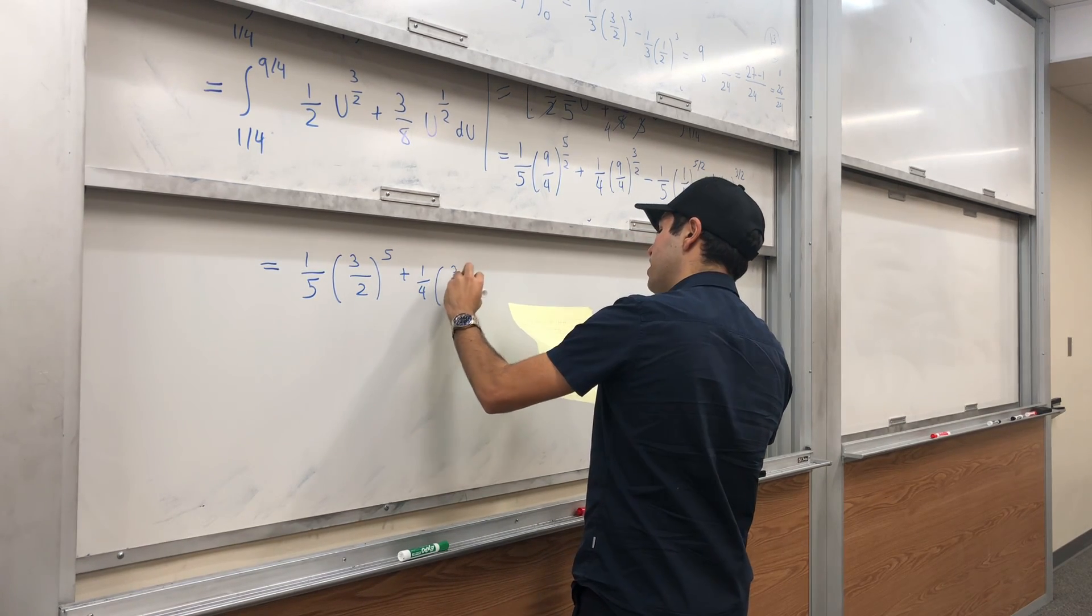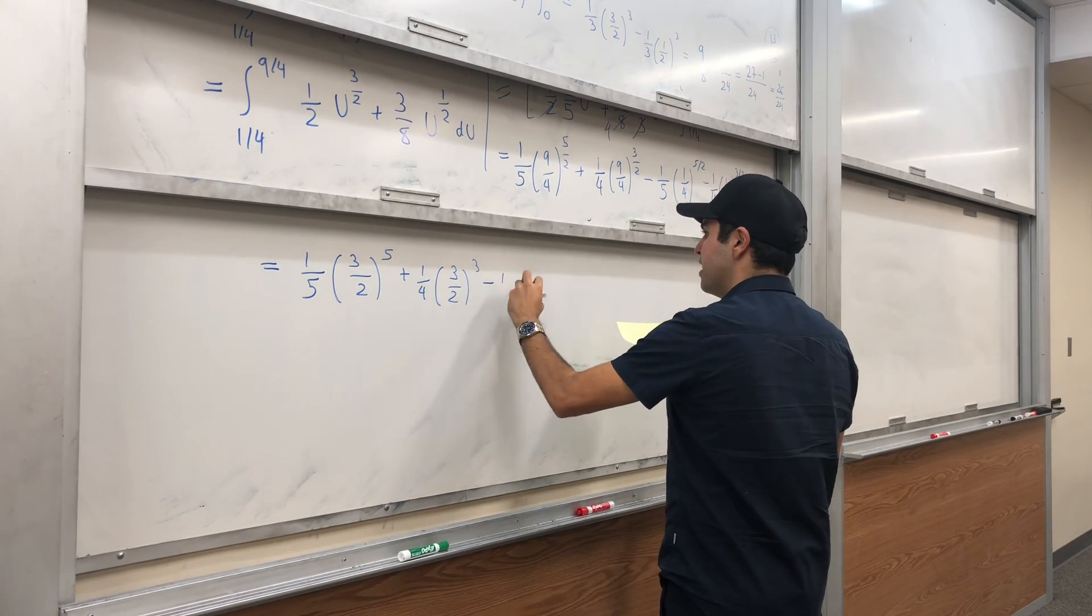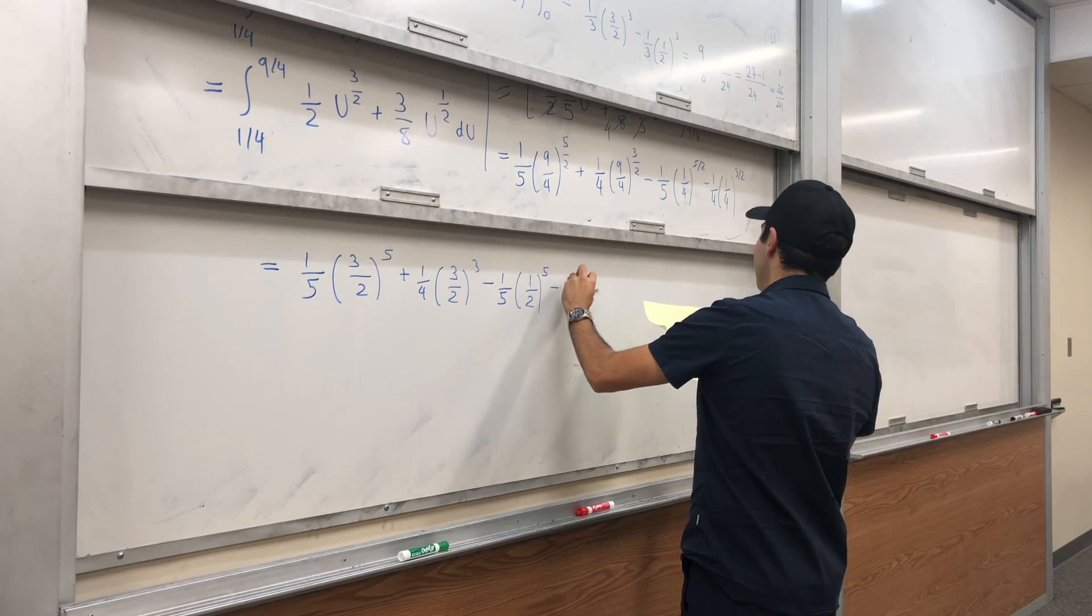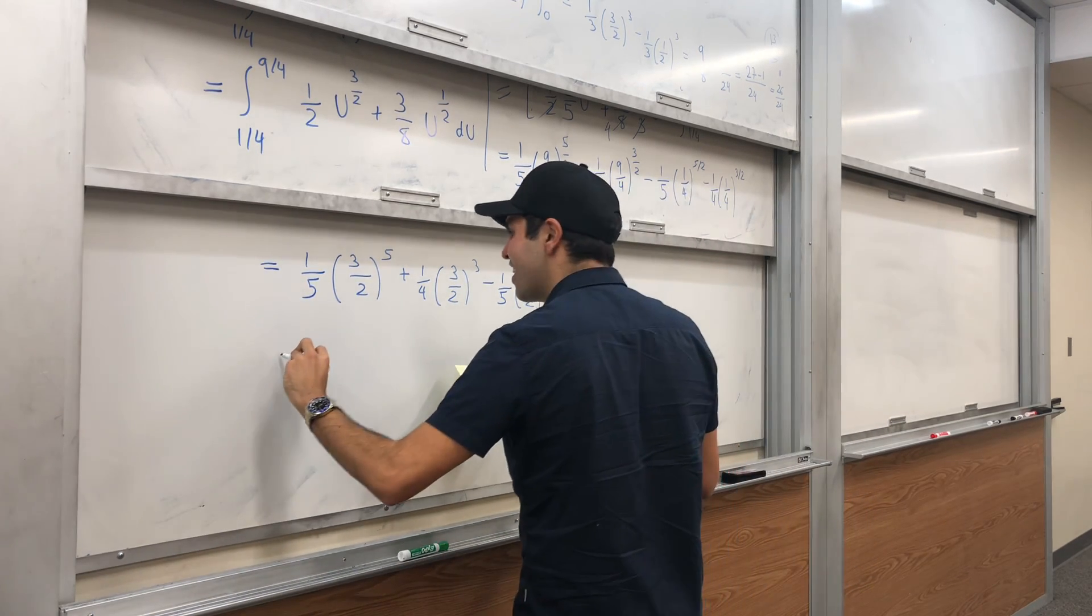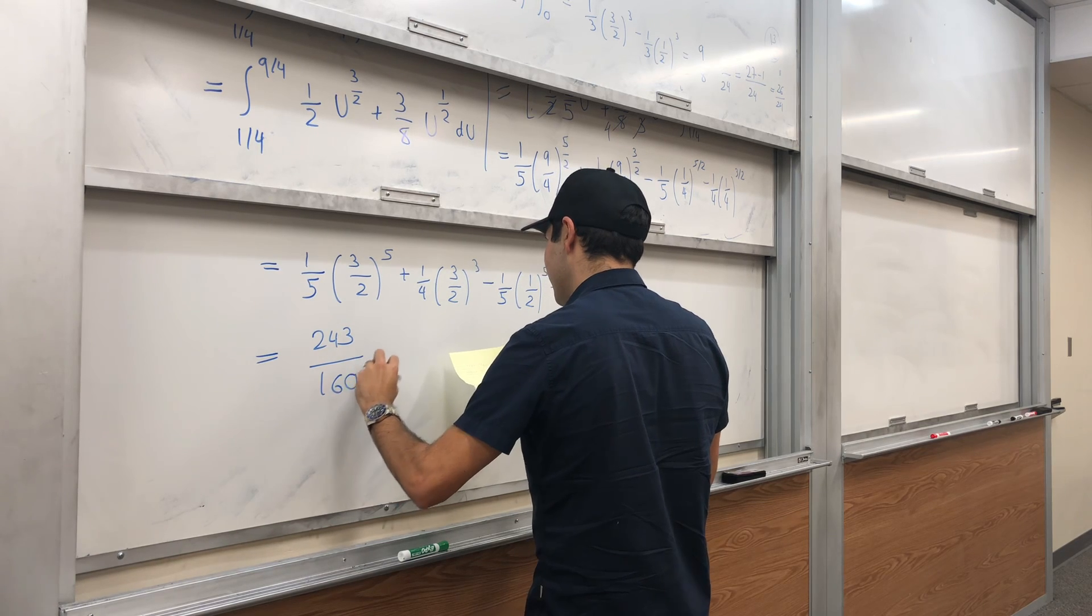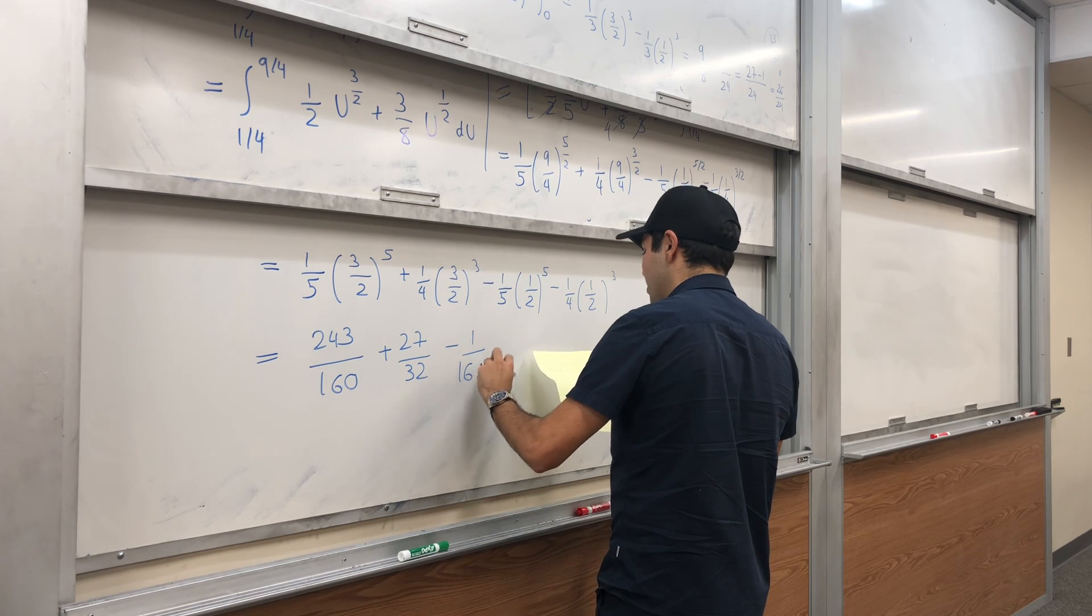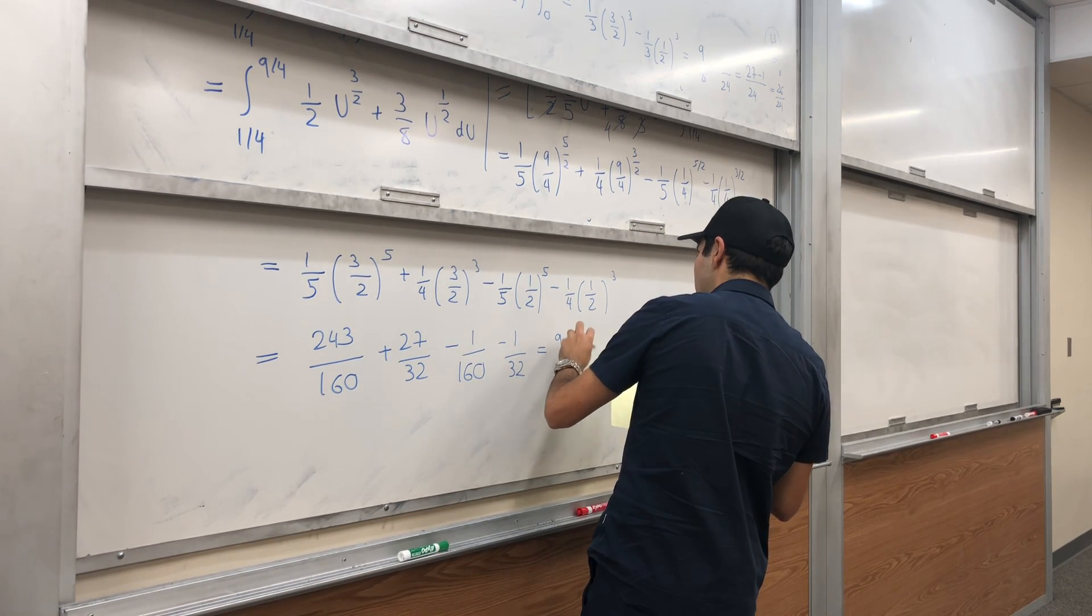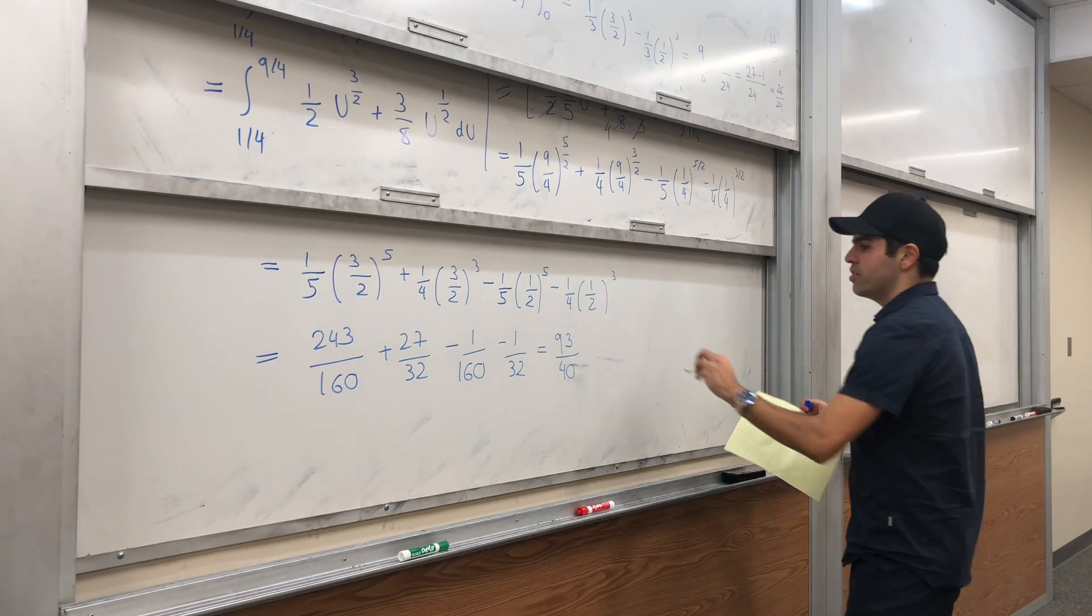And then square root of 1/4 is 1/2, so minus 1/5 times (1/2)^5 minus 1/4 times (1/2)³. And if you do that and actually did the math: 243/160 plus 27/32 minus 1/160 minus 1/32. And lo and behold, it becomes 93/40. So that is our C.